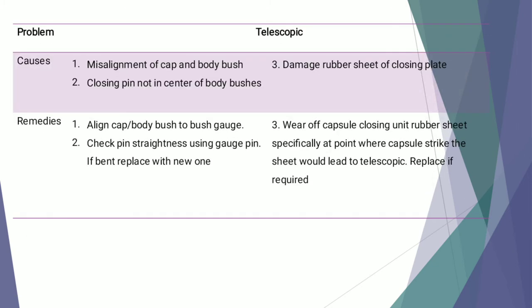The next defect is telescopic. Telescopic is caused because of misalignment of cap and body bush, closing pin not in the center of body bushes, and damaged rubber sheet of closing plate. It can be overcome by aligning cap and body bush to bush gauze, checking pin straightness using a gauze pin and replacing if bent. For the damaged rubber sheet of the closing plate, wear at the point where the capsule strikes the sheet leads to telescopic, so it needs to be replaced if not in proper condition.